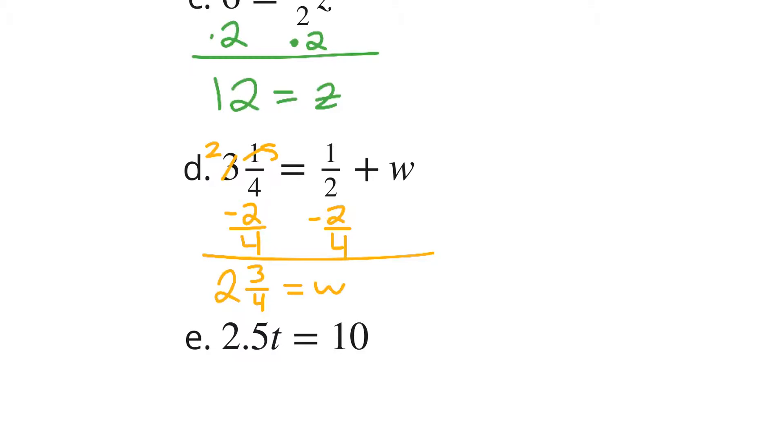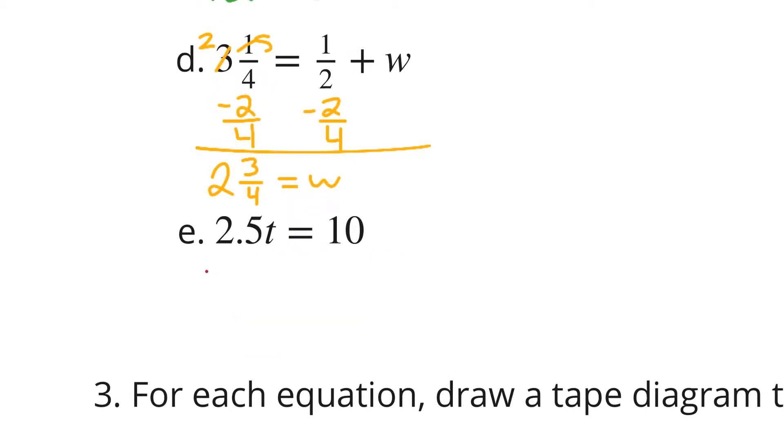Lastly, 2 and 5 tenths times T equals 10. If I divide by 2 and a half on both sides here, 10 divided by 2 and a half is equal to 4. So T equals 4.